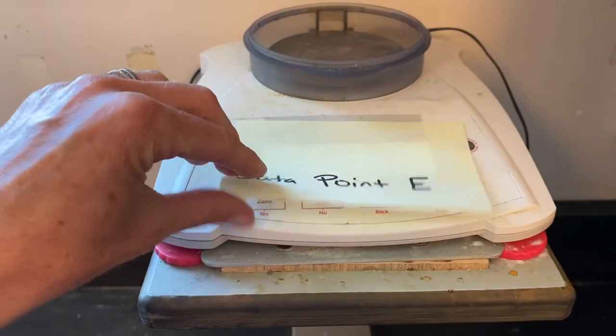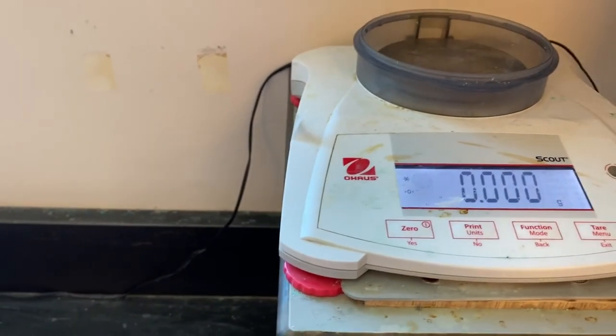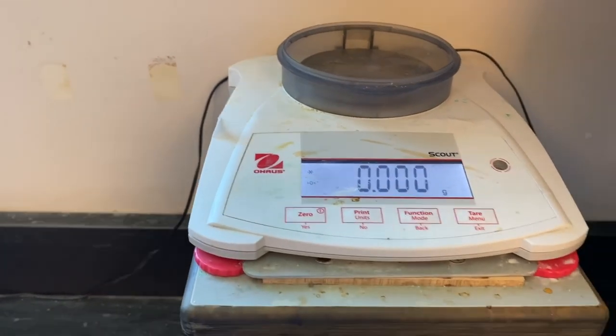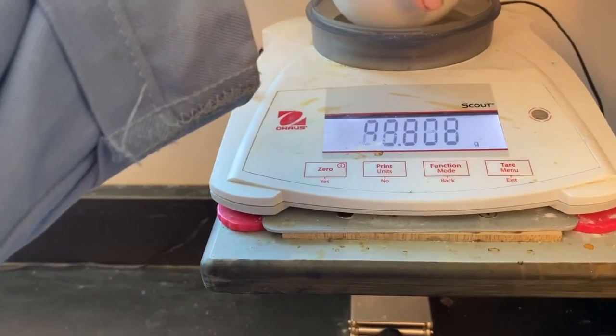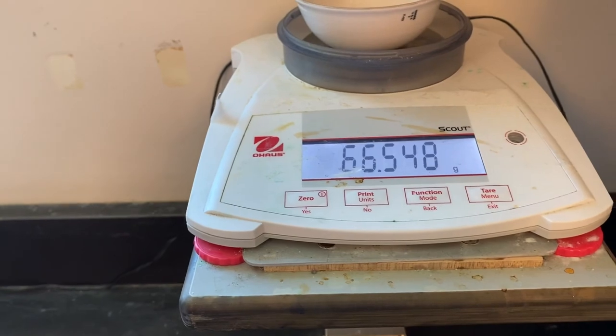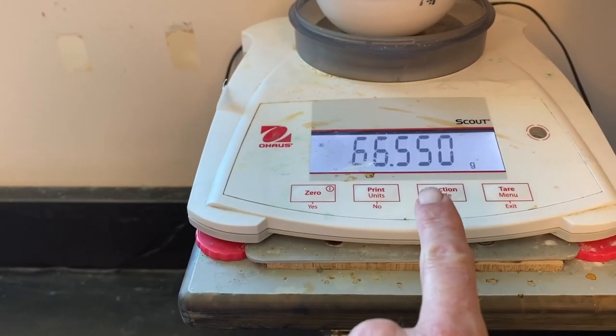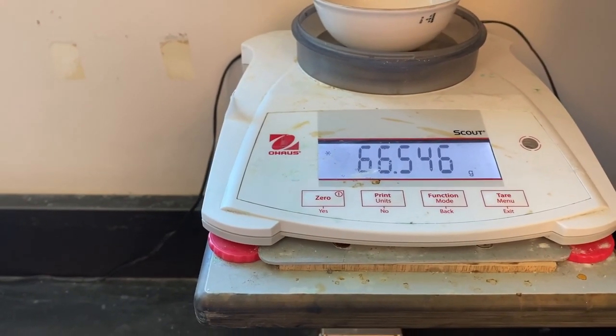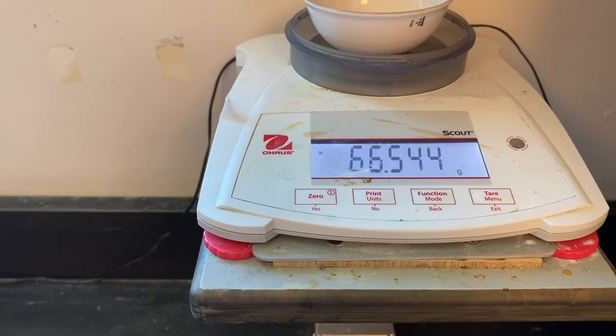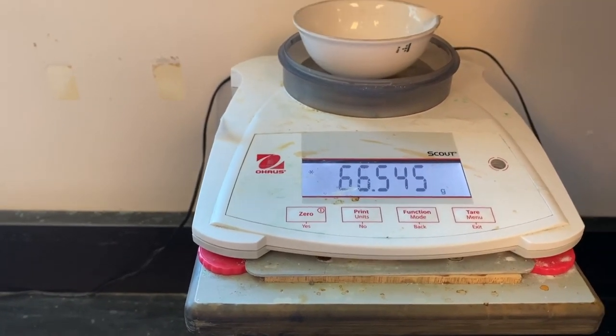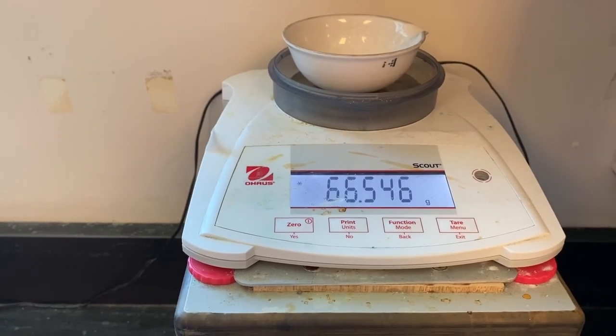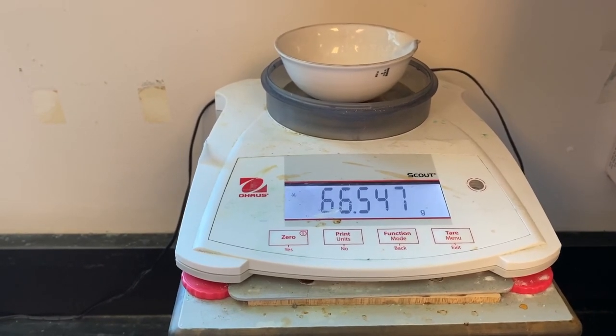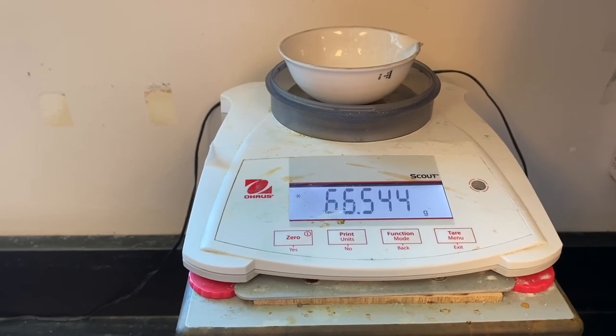Just one note about using these digital scales. Once they're zeroed let's say I want to determine the mass of something. In this case, 66.550 grams, 549, 548. So you need to stabilize. Once it stabilizes, when you're back in lab you record all three digits past the decimal point. So when you come back to lab you want to make sure for a digital scale every single digit you read is significant. You want to record that and notice the units of grams.